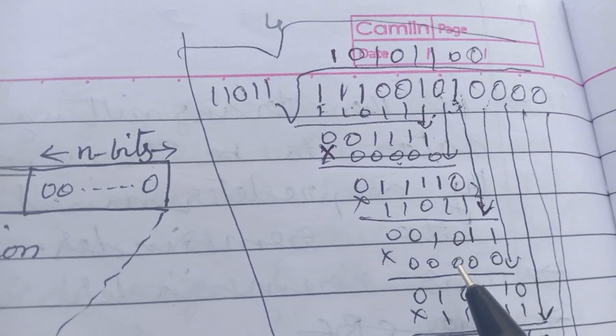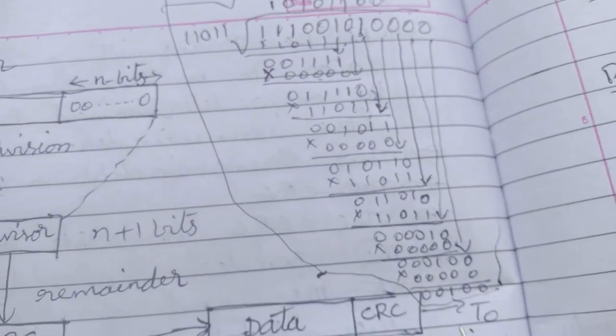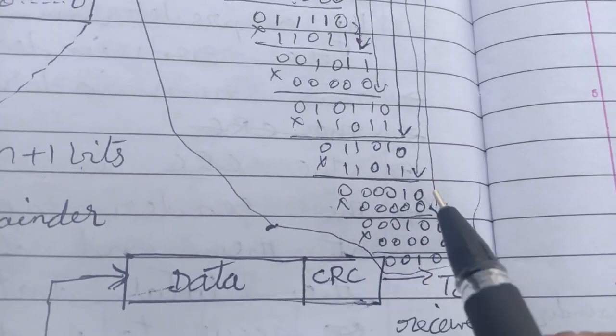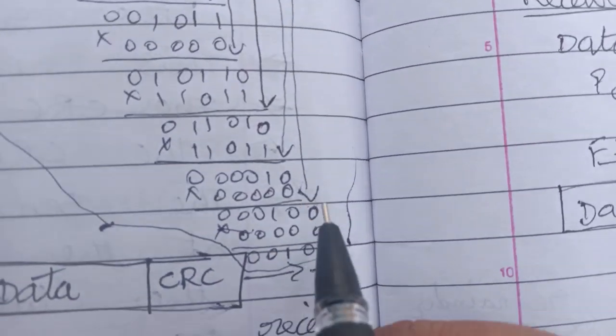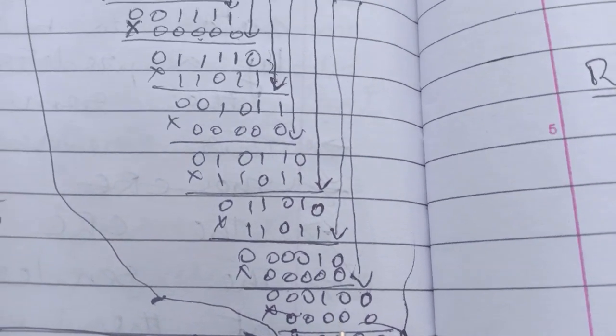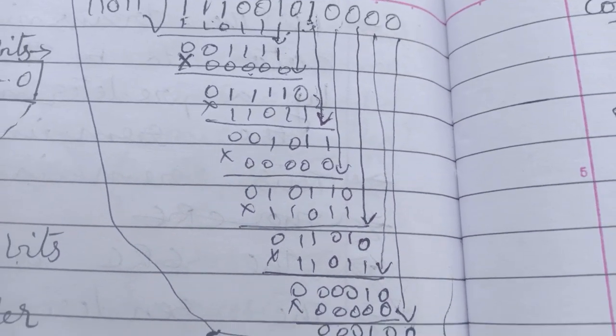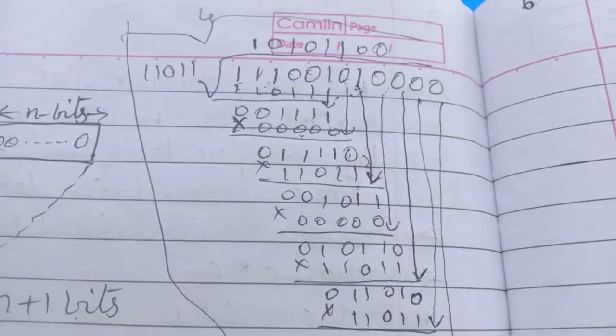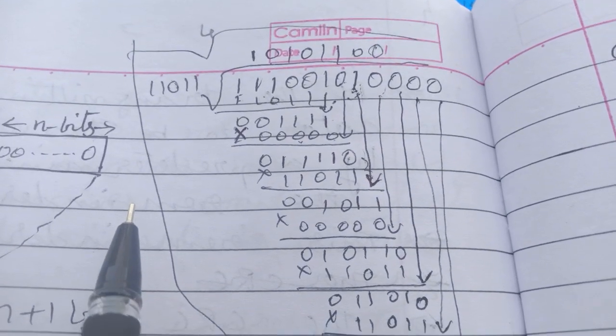Like this, you have to keep on performing this division till the last value. At the end, your reminder is 00100. The reminder is 00100 and the polynomial we are using is 110011.